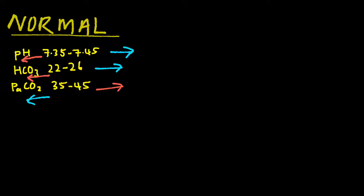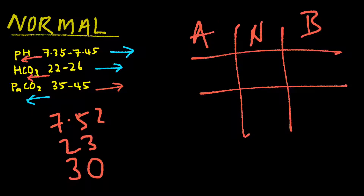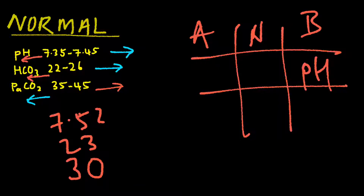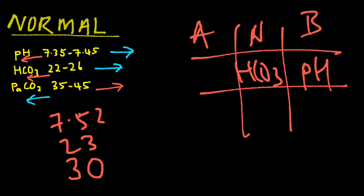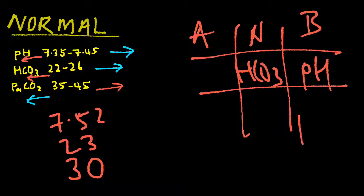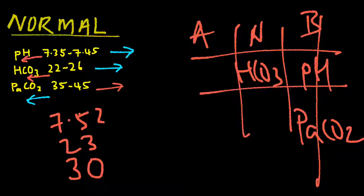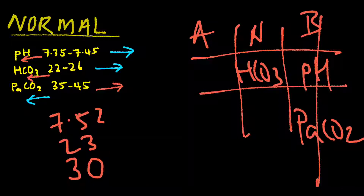And for the very last example, you have three results. pH is 7.52, which is under the alkaline category — pH under alkaline. HCO3 is normal, so we put it under the normal category. PaCO2 is 30, which is under alkaline. Tic-tac-toe goes this way. The interpretation will be uncompensated respiratory alkalosis.